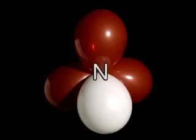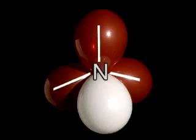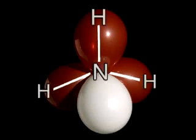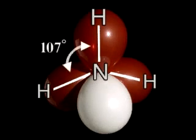Ammonia has one nitrogen atom with one lone electron pair and three bonding electron pairs coupled with three hydrogen atoms. Ammonia has a triangular pyramid structure with a bond angle of 107 degrees.